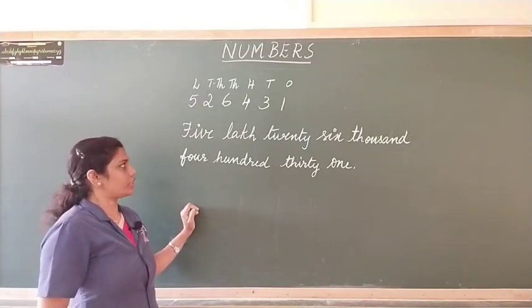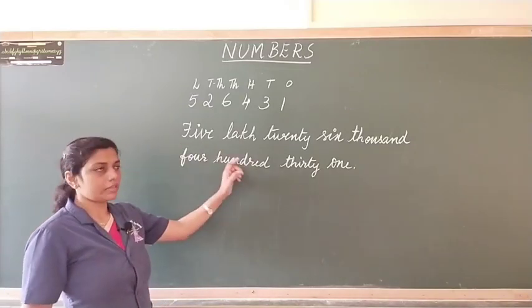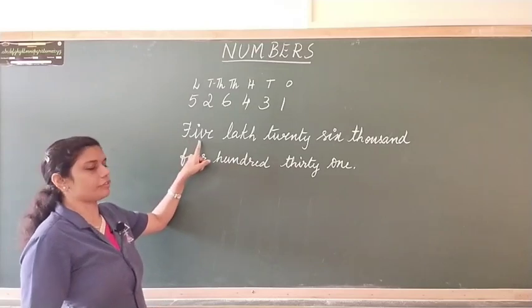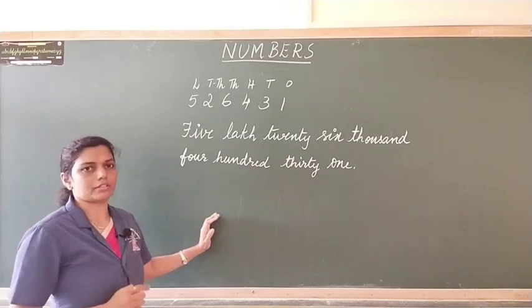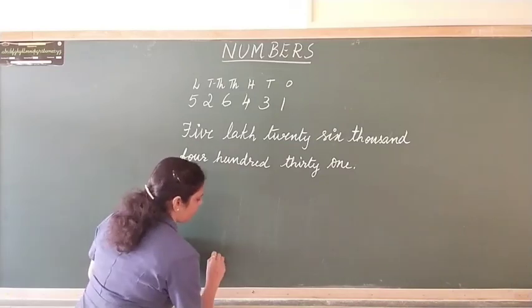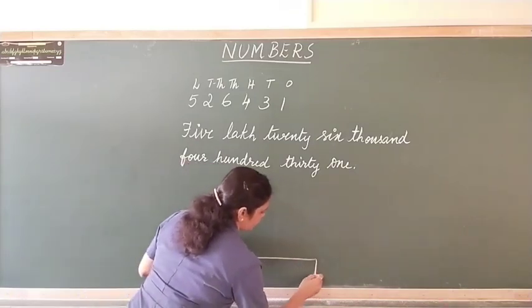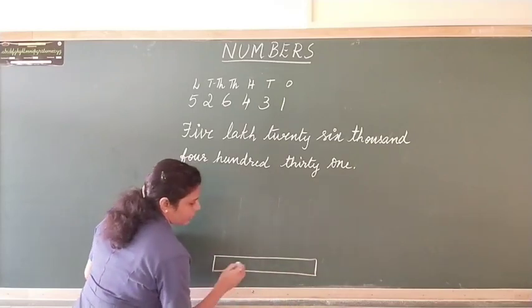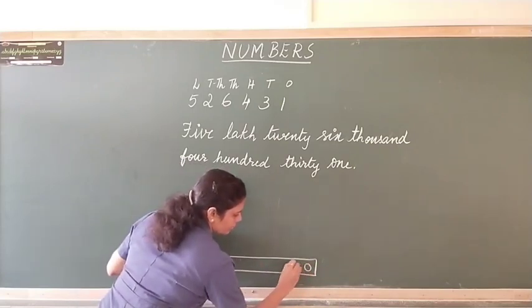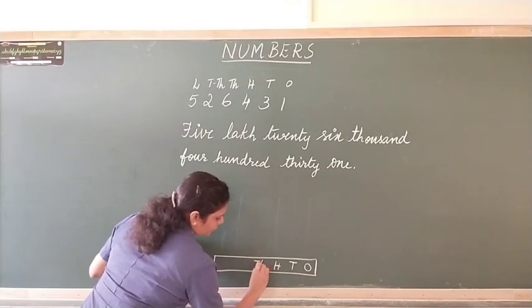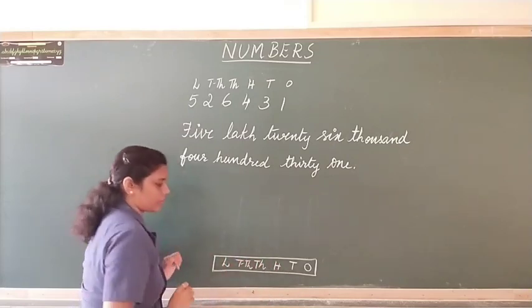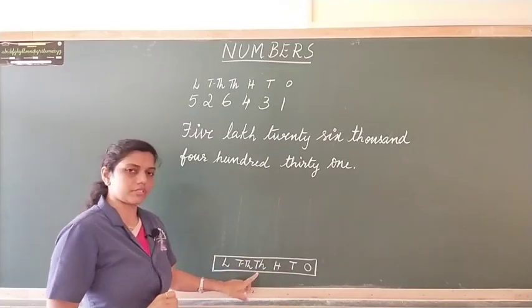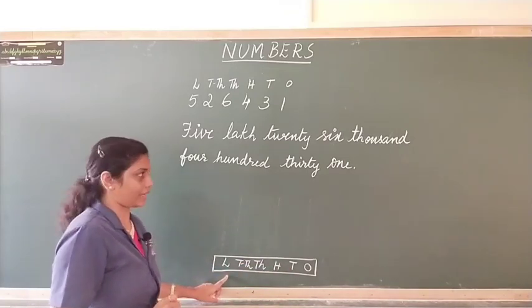One thing remember children, when you start the number name, the first letter of the first word should be in capital. So we will write the abacus for this, we draw the base, we write the places. Ones, tens, hundreds, thousands, tens thousands and lakhs.